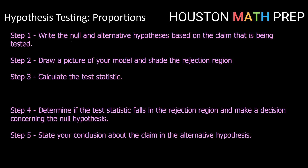It starts the same way as running a hypothesis test for anything, and that is we need to write the null and alternative hypotheses. Our null hypothesis will be that P, or our population proportion, is equal to some status quo value. And our alternative hypothesis will be that P is either greater than, less than, or not equal to that number — depending on how the claim is stated.